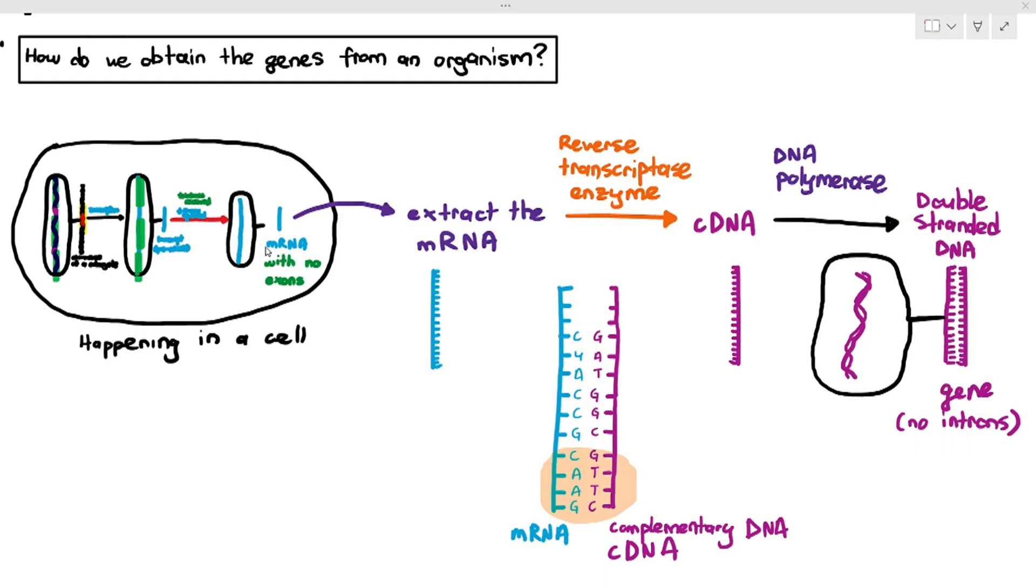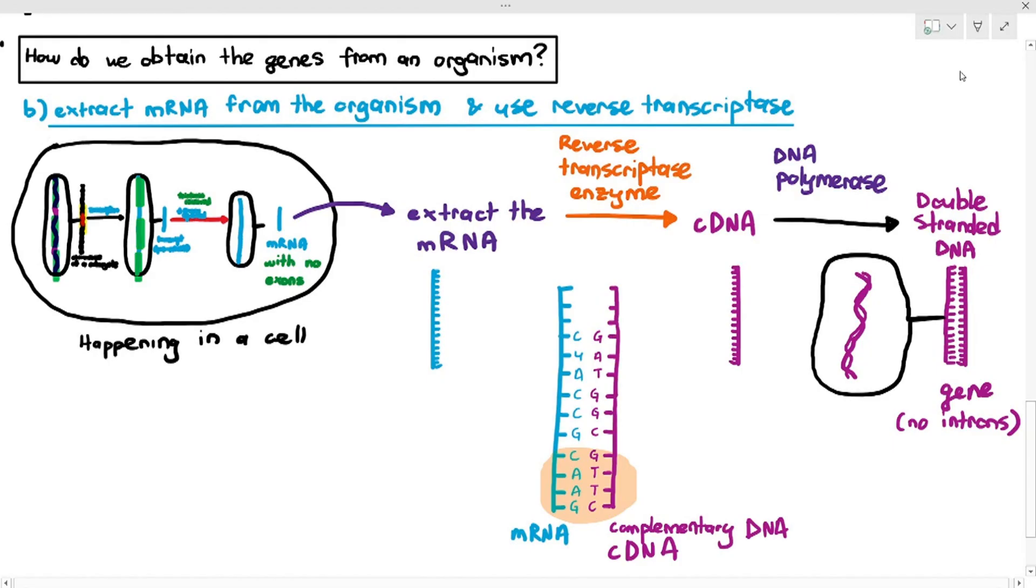So, to solve this problem of not getting a gene with introns, we just get RNAs out, we extract the mRNA out, we use the reverse transcriptase enzyme to produce cDNA, or complementary DNA, and we use a DNA polymerase to make it back into a double-stranded DNA. So, in the exam, if you want to explain this, you just have to say, extract the mRNA from the organism, use reverse transcriptase and DNA polymerase to produce the double-stranded DNA again. So, you will get your gene.